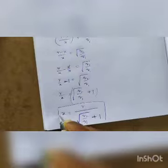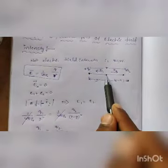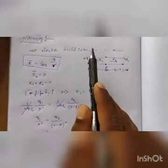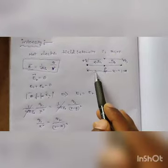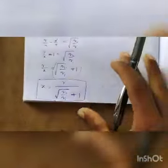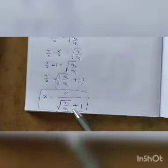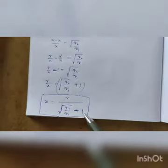This is the effective formula: if two like charges are separated by a distance r, the null point or neutral point is located at a distance x = r / (√(Q2/Q1) + 1) from charge q1.